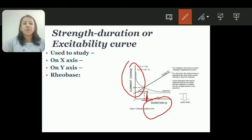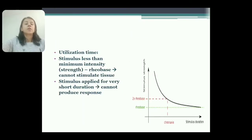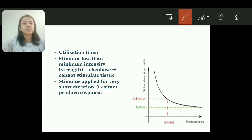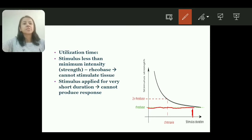Next is utilization time. When the minimum intensity of stimulus — that is, the rheobase strength of stimulus — is applied, the time required to stimulate the tissue is called utilization time. When the stimulus is less than the minimum intensity, less than rheobase strength, it cannot produce a response.